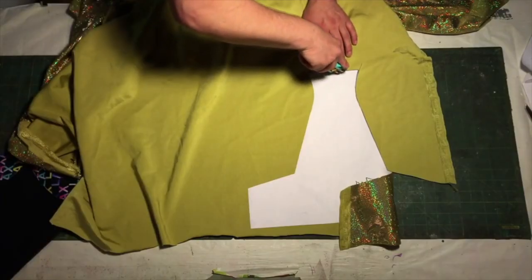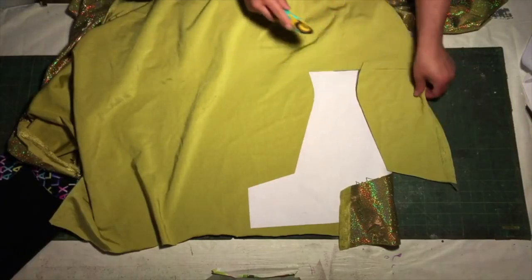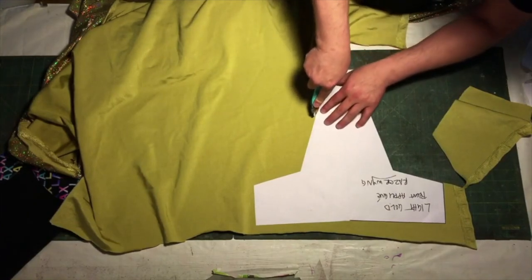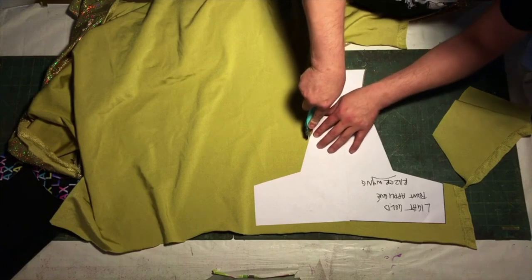Next, we cut out the designs, what we call applique, for our trunks. For this, we choose two tones of gold holographic foil dot spandex.